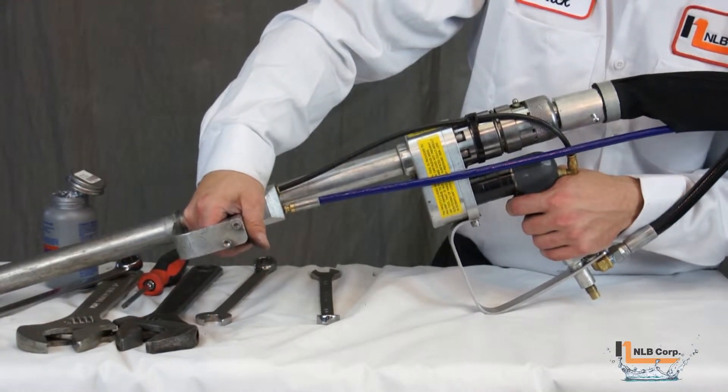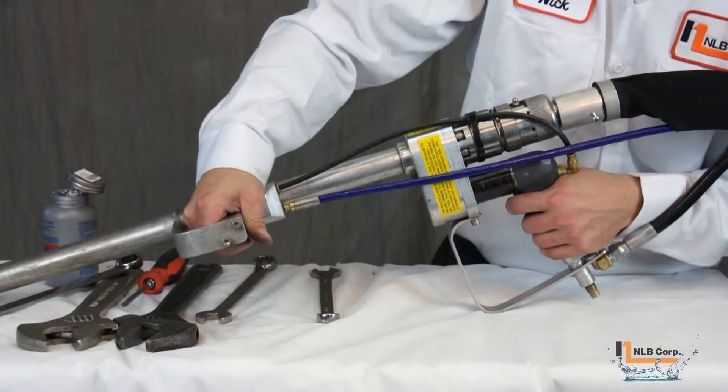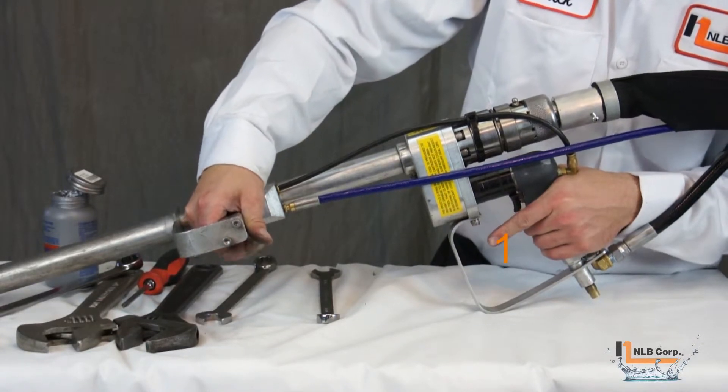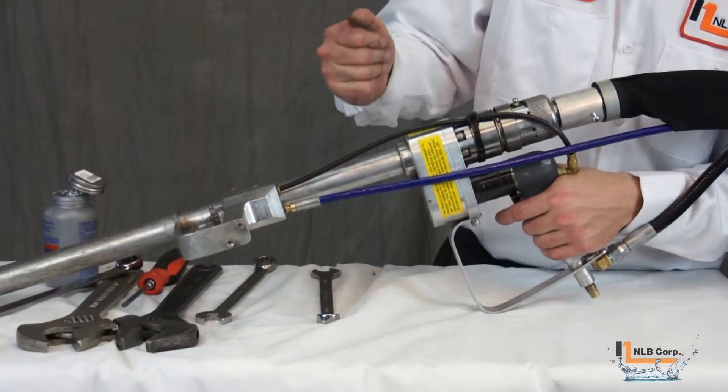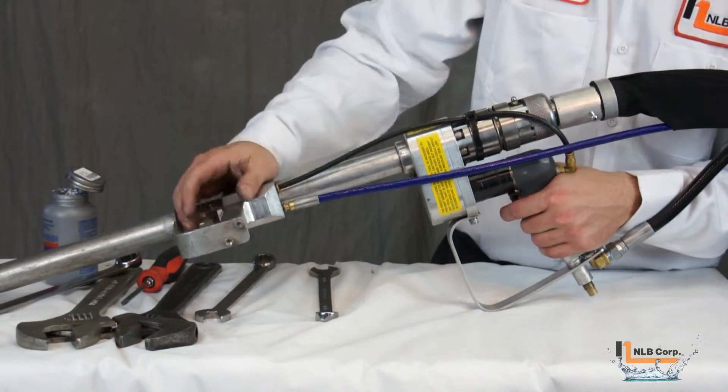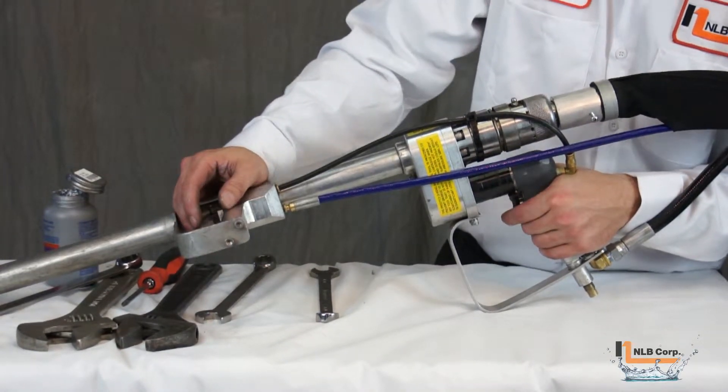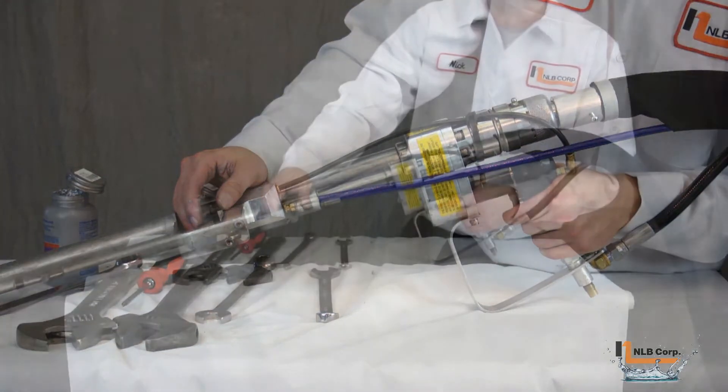Conversely, when stopping the flow of high pressure water, it's important to first release the rear trigger and then the front trigger. Again, in both of these instances, the goal is to never have the lance rotating without the presence of water.